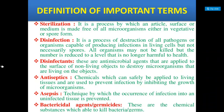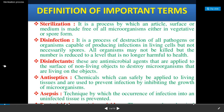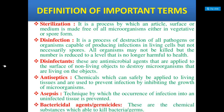The next concept is antiseptic. Antiseptics are chemicals which can be safely applied to living tissues. These are used to prevent infection by inhibiting the growth of microorganisms. So antiseptics are chemicals which can be applied to the living tissues or living organisms on the surface of living organisms, and their main purpose is to prevent infection. Antiseptics prevent that infection by inhibiting the growth of microorganisms.